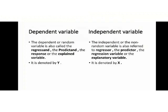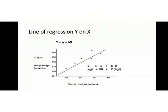Line of regression Y on X. As you can see, an equation is given in which Y is equal to a plus bX. The body weight is given on Y-axis as it is dependent variable and height is given on X-axis as it is independent variable.